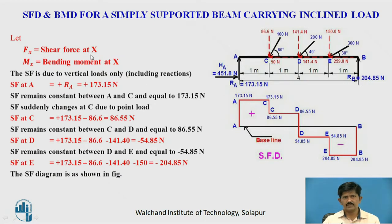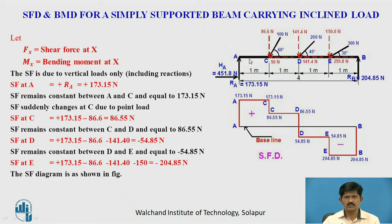Now for the shear force diagram, considering vertical loads only including reactions: the shear force at A is +173.15 N (RA acting upward). This remains constant between A and C as there is no other load. The shear force suddenly changes at C due to the vertical load, giving shear force just right of C = +173.15 − 86.6 = +86.55 N. The shear force remains constant between C and D.